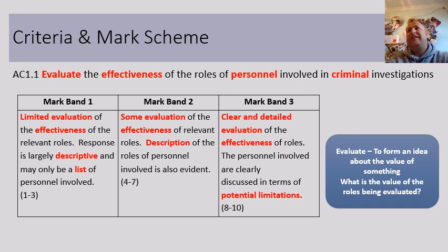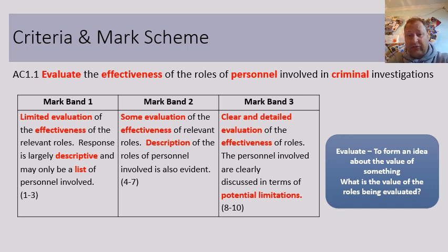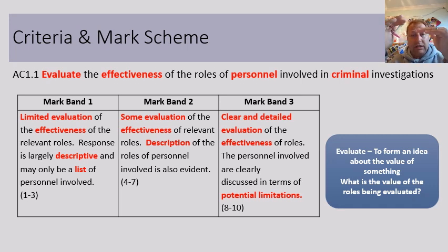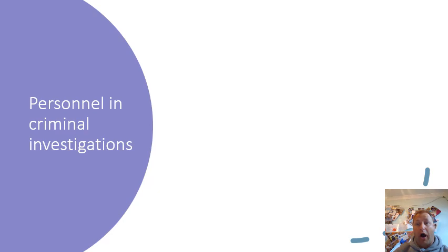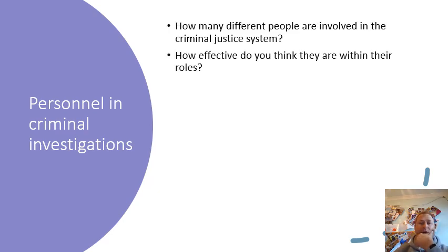The key issue is that we need to look at cases where personnel have made mistakes — the police, forensic scientists, medical examiners, and the Crown Prosecution Service. They do a fantastic job virtually all the time, so it does feel like nitpicking, but we have to evaluate effectiveness: pros and cons, focusing on the cons, then talk about how effective each role is overall.